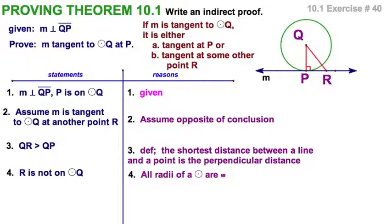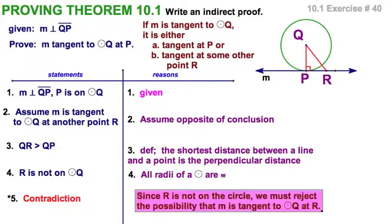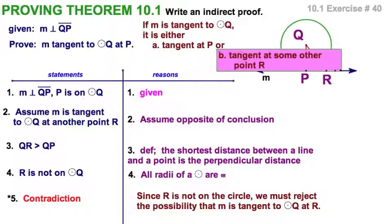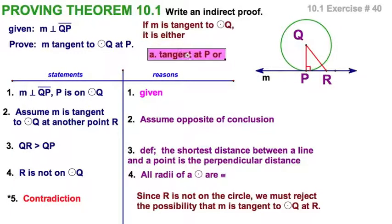So if QR is longer than QP, R is not on the circle. And of course, if R is not on the circle, I'd say it's pretty reasonable to say that is a contradiction. It's a contradiction because it can't be a point of tangency if it's not even on the circle. So that means if R is not on the circle, we must reject this possibility. I'll call that possibility B. And therefore, the only thing that is a possibility, the only remaining possibility, is my first choice, A. That, indeed, this line M is tangent to circle Q at point P.